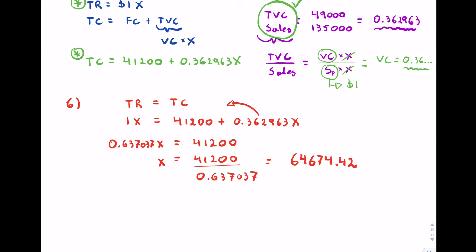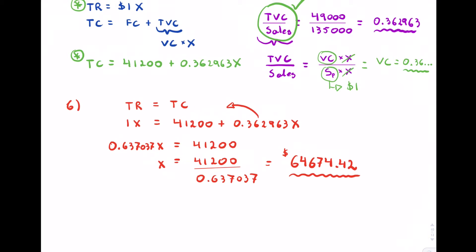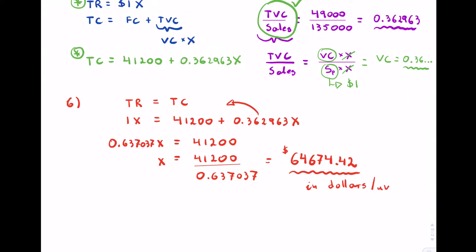Solving gives x equals sixty-four thousand six hundred seventy-four point four two. This is both in dollars and in units because we chose one dollar as the selling price. So the break-even point is approximately sixty-four thousand six hundred seventy-four, in dollars and in units assuming the one dollar selling price.